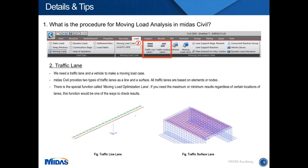The second step is the traffic lane. We need a traffic lane and a vehicle to make a moving load case. There are two types of traffic lane: traffic line lane and surface lane. If we have a frame element model, it would be good to use the traffic line lane type. If we have planar elements — like a grillage model, plate composite, or others — it would be good to use the traffic surface lane. The traffic lane option also has a moving load optimization lane function.